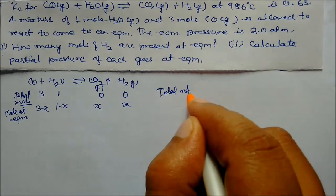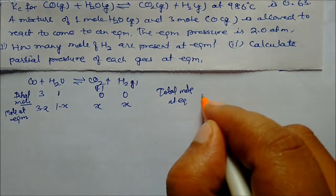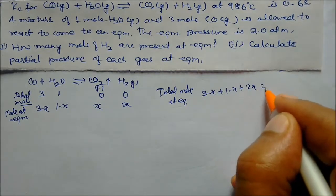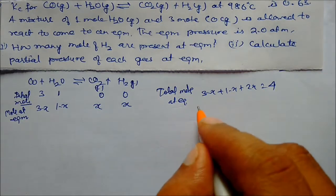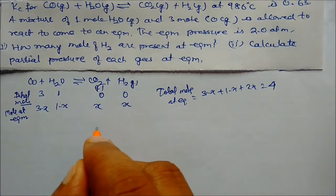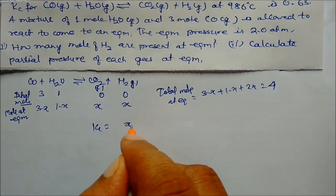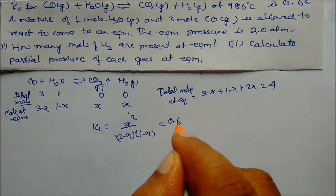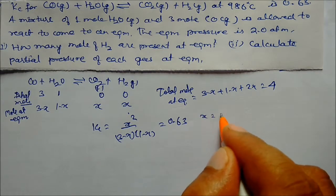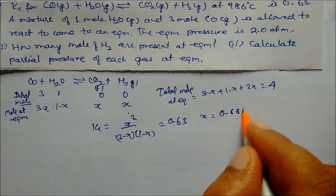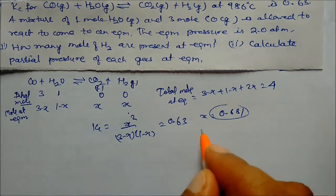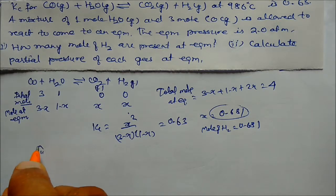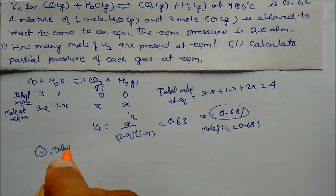Moles at equilibrium: CO = 3 − x, H₂O = 1 − x, CO₂ = x, H₂ = x. Total moles at equilibrium = (3 − x) + (1 − x) + 2x = 4. Kc = x² / [(3 − x)(1 − x)] = 0.63, so x = 0.681. Moles of hydrogen = 0.681.